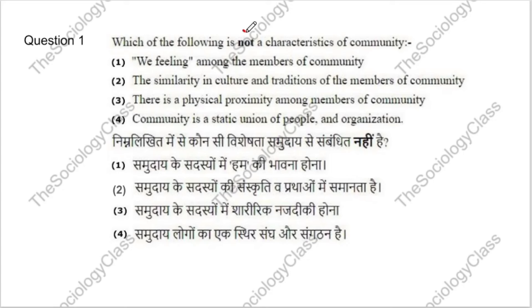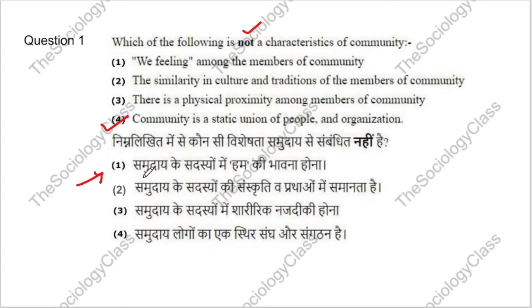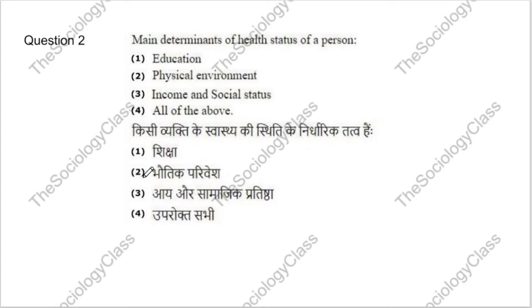Question 1: Which of the following is NOT a characteristic of community? Options include: we-feeling among members, similarity in culture and traditions, physical proximity among members, and community is a static union of people and organization. The correct answer is option 4 — community is a static union of people. The other three are correct characteristics of community.